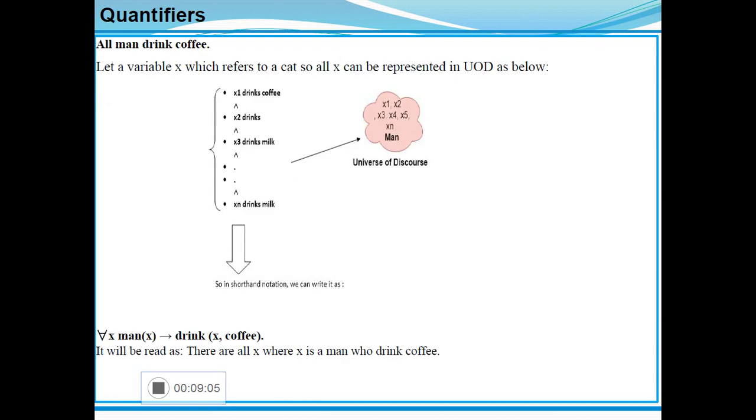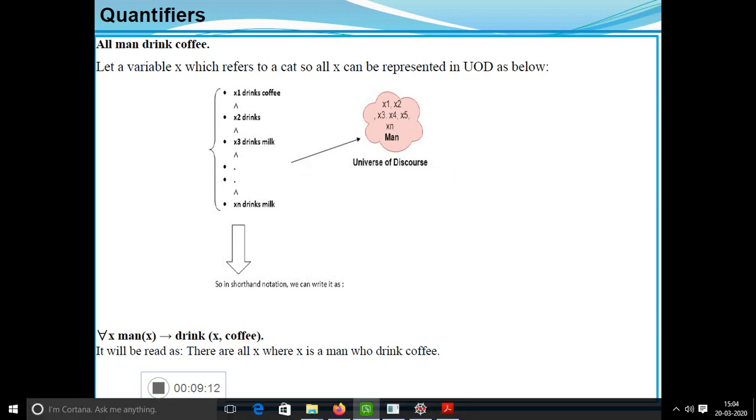Another example to understand this for all universal quantifier. Let's take the statement: all men drink coffee. Let variable x which refers to men. All x can be represented in the universe of discourse as follows: x1 drinks coffee and x2 drinks coffee, x3 drinks milk, up to xn drinks milk. Here x1, x2, x3, x4, x5 up to xn are universal discourse variables. Then man is also a universal discourse variable. How to represent all men drink coffee? The corresponding mathematical notation is: for all x, man(x) implies drink(x, coffee). It will be read as: for all x where x is a man who drinks coffee.